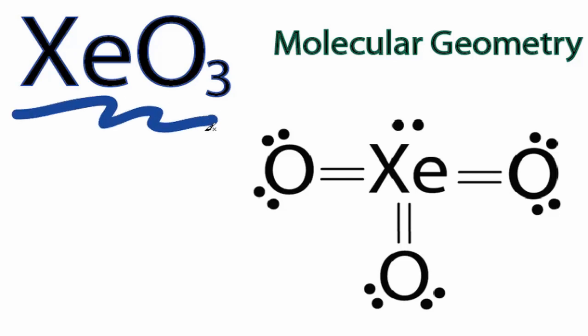To find the molecular geometry for XeO3, we first need to look at the Lewis structure. We can see that we have three oxygens on that central xenon atom, but we also have these two electrons, this pair of lone pair electrons up there, so we've got to think about those as well.